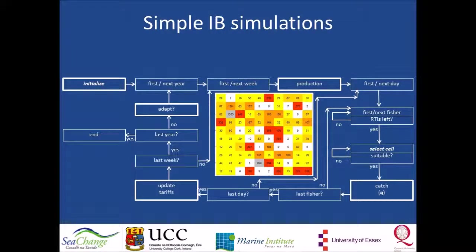We use an individual-based simulation model. This is a parsimonious choice to explore the operational challenges to the RTI system, as it allows us to study how system-level properties emerge from the behavior of individuals, and how the system subsequently affects individual behavior. We are able to include variability among individuals, local interactions, and adaptation of individual behavior relative to the changing environment.